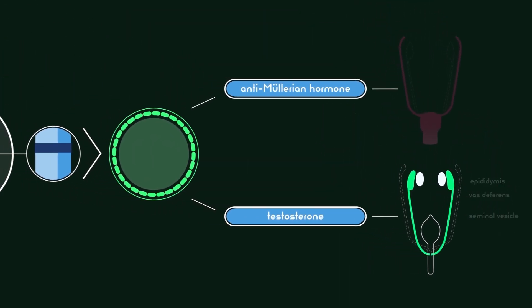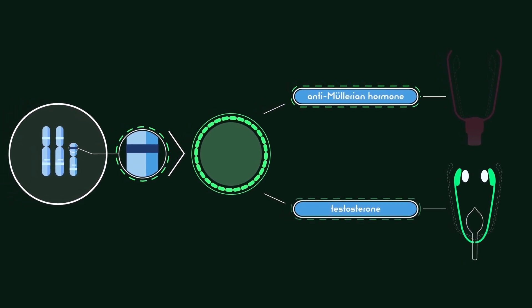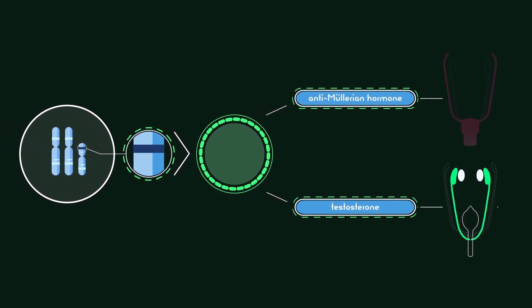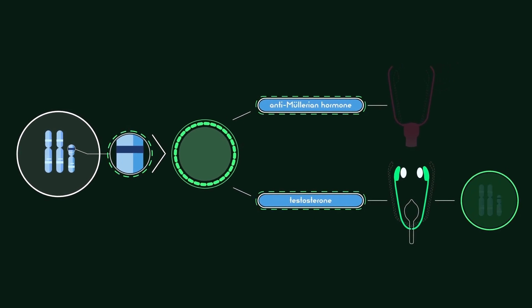Because of a functioning SRY gene, anti-Müllerian hormone, and functioning androgen receptors, the fetus develops anatomy to support the production of small gametes. Thus, newborns with Klinefelter syndrome are males.